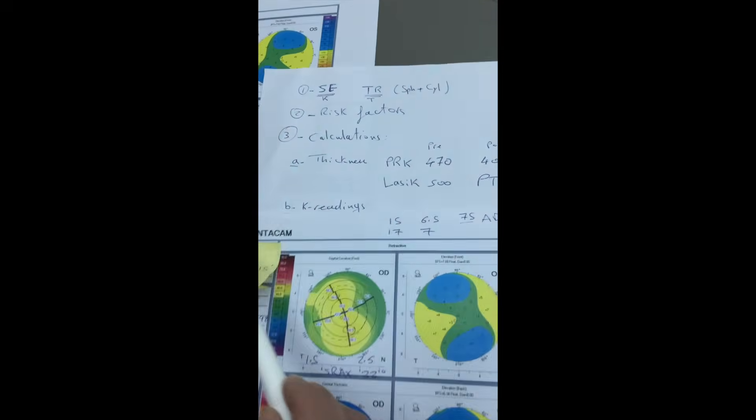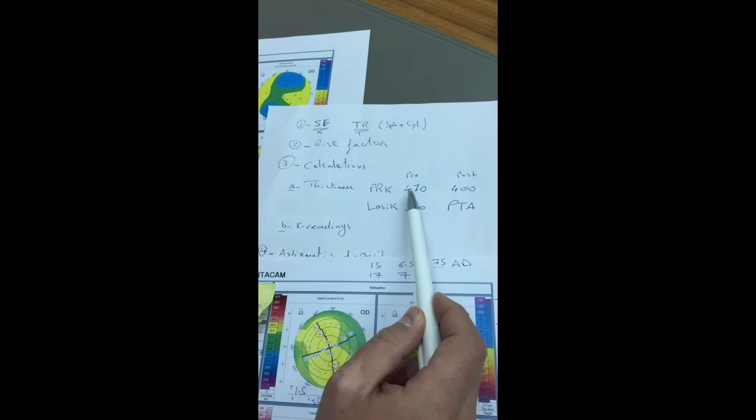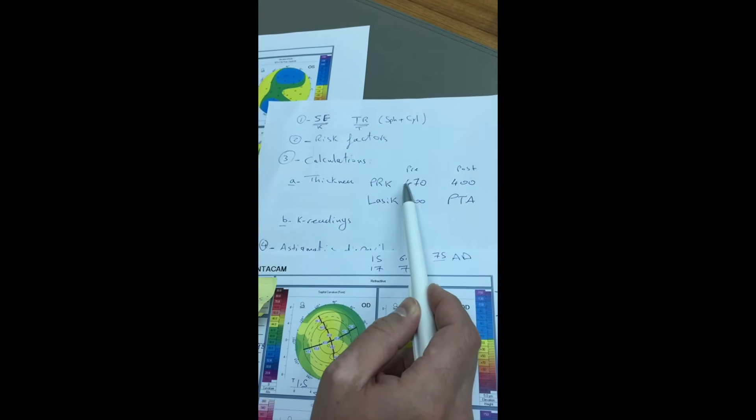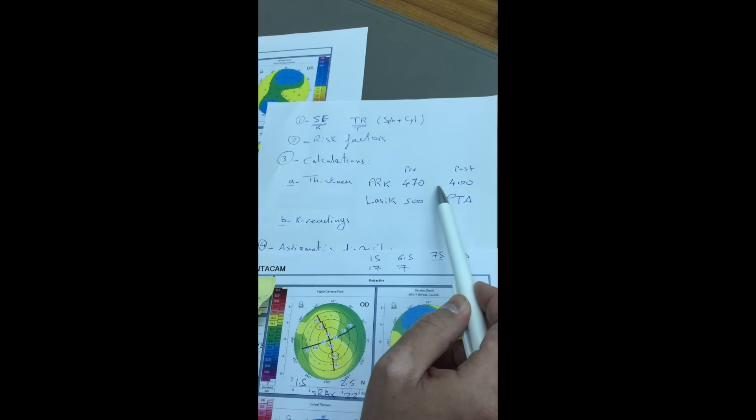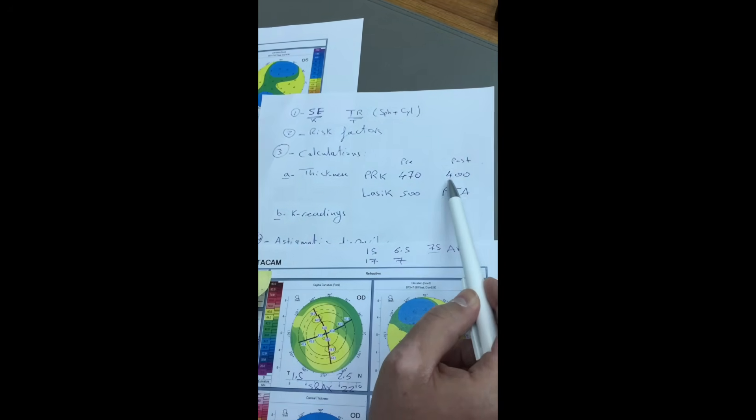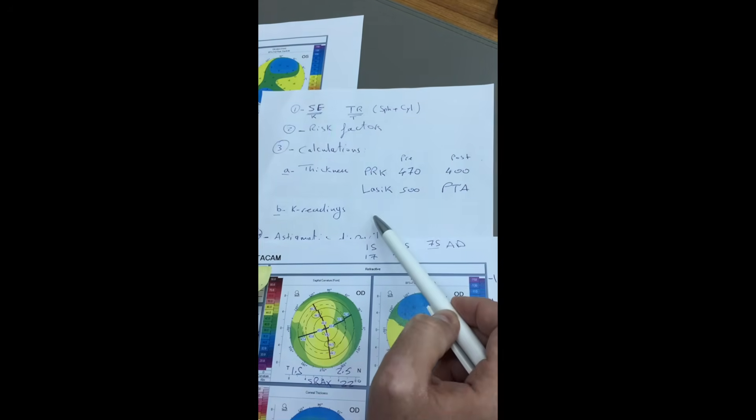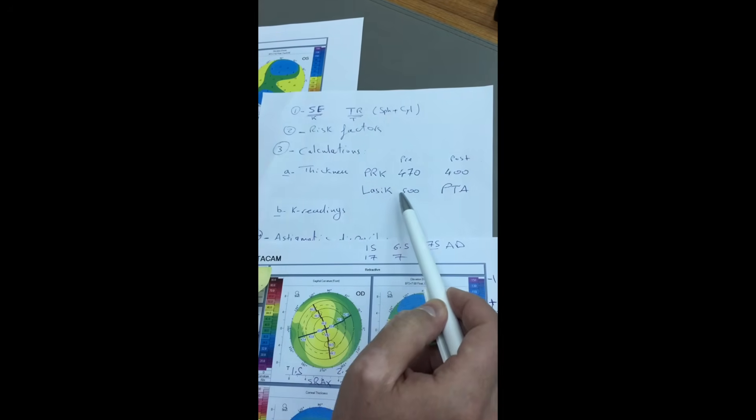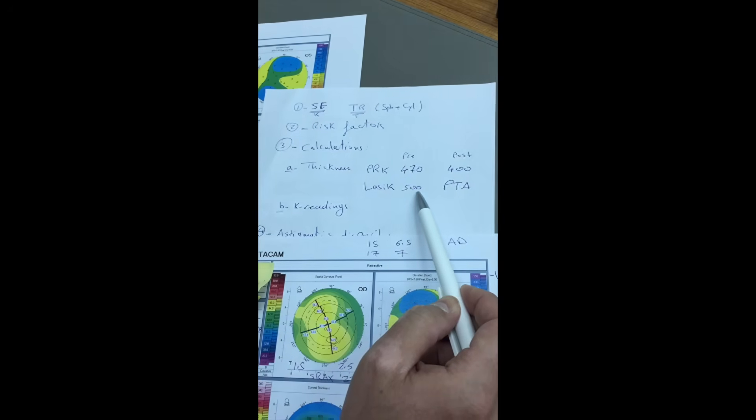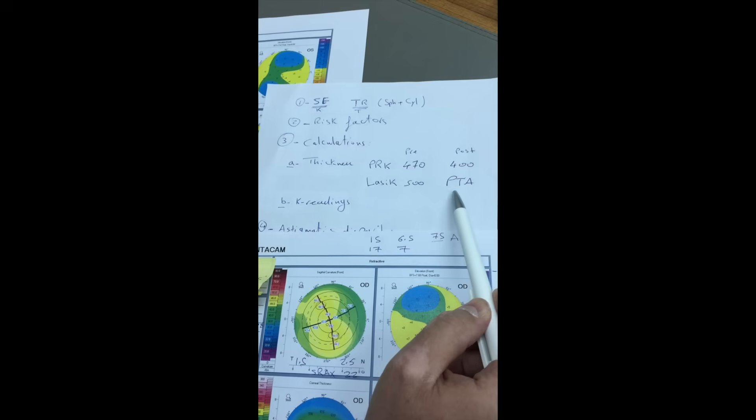The calculations. Thickness. To start with PRK, the preoperative thickness should be more than 470. And after calculating the ablation depth, the final postoperative corneal thickness, including the epithelium, should be at least 400 microns. And for LASIK, the starting point is 500 microns, while the postoperative issue is the PTA, the percent tissue altered.